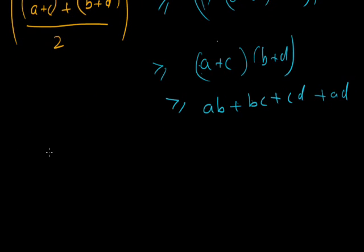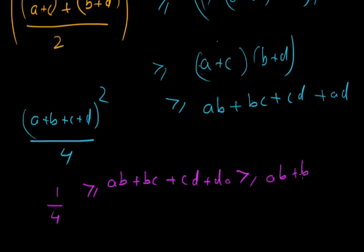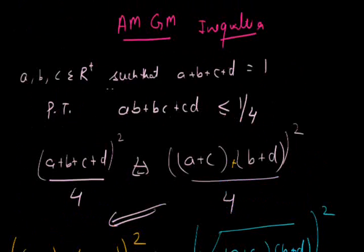Rewriting A plus B plus C plus D equals 1, we get 1/4 is greater than or equal to AB plus BC plus CD plus DA. Since all quantities are positive, this quantity is obviously greater than or equal to AB plus BC plus CD, because if you subtract the DA term (D and A are positive), this quantity becomes bigger. Therefore, since AB plus BC plus CD plus DA is less than 1/4, AB plus BC plus CD is also less than or equal to 1/4. Hence proved.